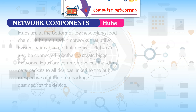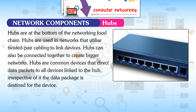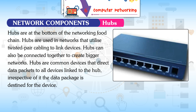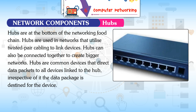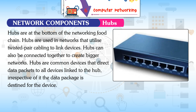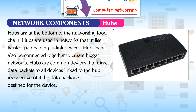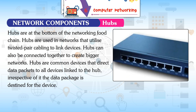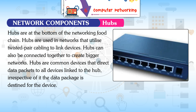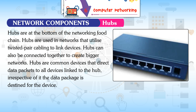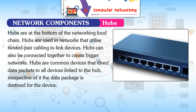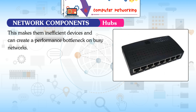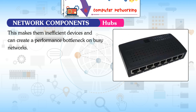Hubs are at the bottom of the networking food chain. They are used in networks that utilize twisted pair cabling to link devices and can be connected together to create bigger networks. Hubs are common devices that direct data packets to all devices linked to the hub, regardless of whether the data packet is destined for that device. This makes them inefficient and can create a performance bottleneck on busy networks.